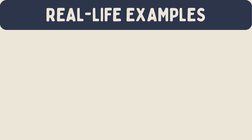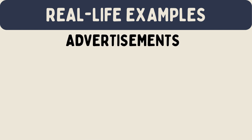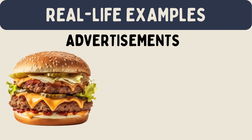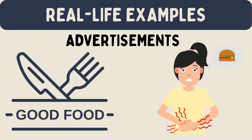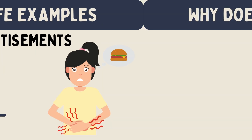Real life examples: higher order conditioning happens all around us, not just with dogs and bells. Think about advertisements. You see a commercial for a delicious burger and start to feel hungry because you've learned to connect the sight of the burger with feeling hungry. Later, you might start feeling hungry just by seeing the logo of the burger company, even if there's no burger in sight. That's higher order conditioning at work.